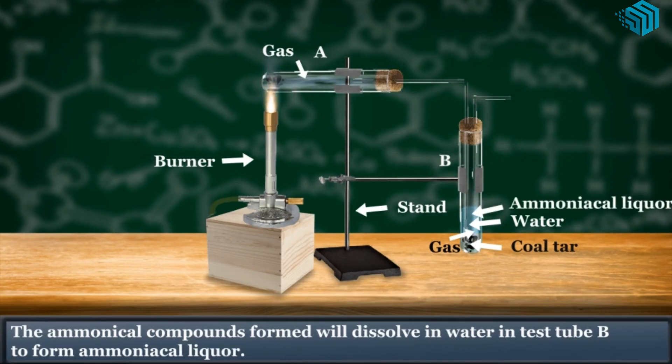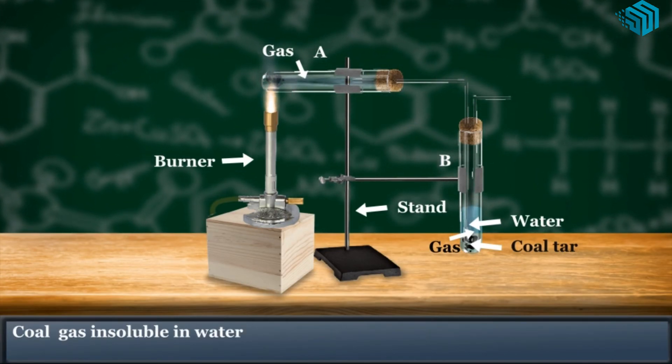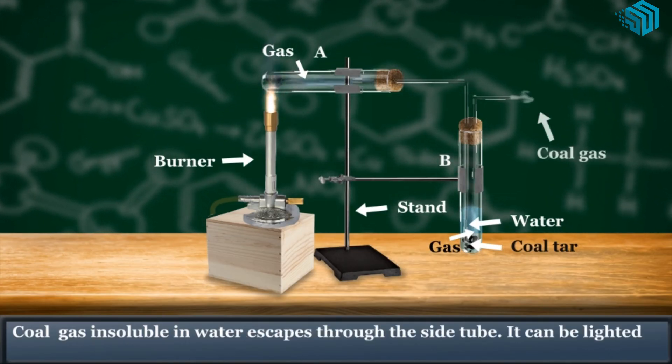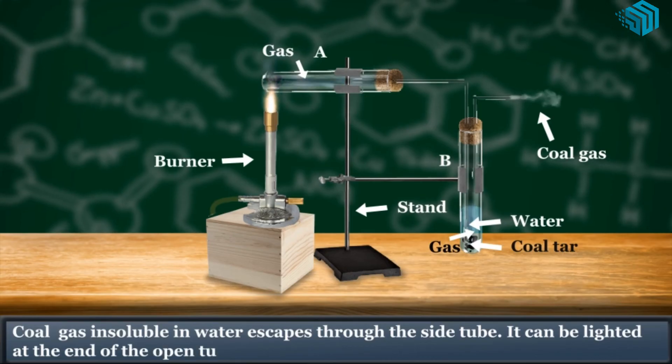Coal gas, insoluble in water, escapes through the side tube. It can be lighted at the end of the open tube.